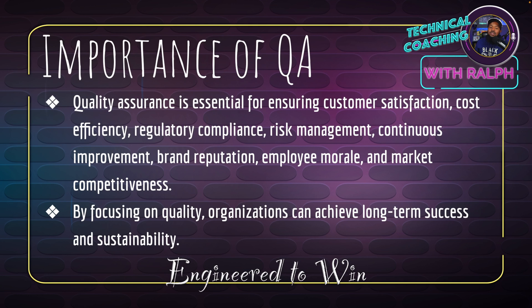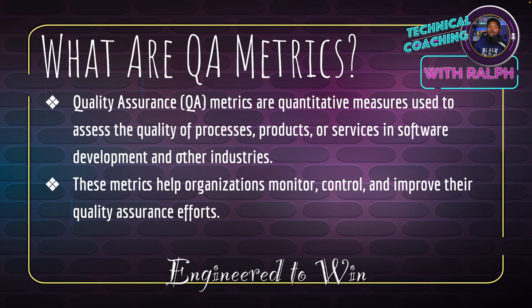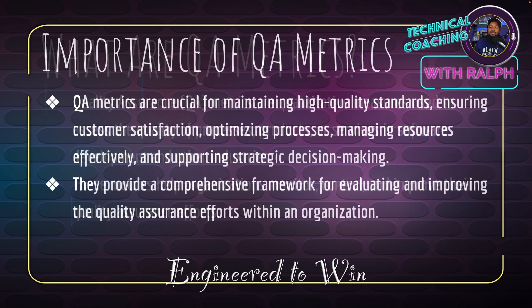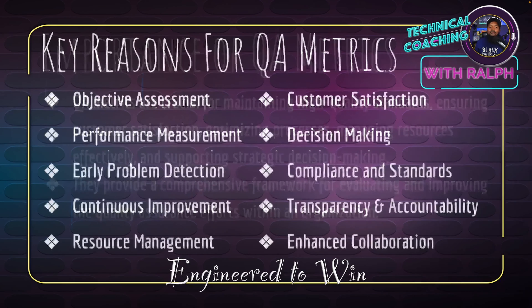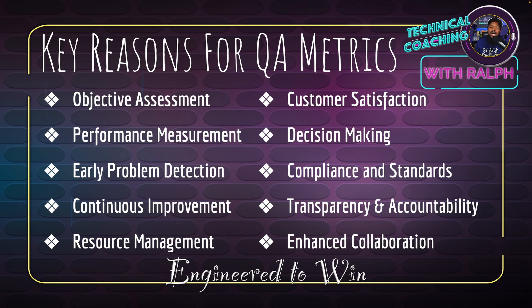QA metrics are quantitative measures used to assess the quality of processes, products, or services in software development and other industries. These metrics help organizations monitor, control, and improve their quality assurance efforts. QA metrics are crucial for maintaining high quality standards, ensuring customer satisfaction, optimizing processes, managing resources effectively, and supporting strategic decision making.